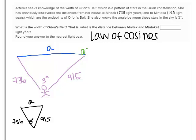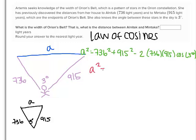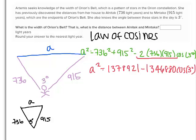We get A squared equals 736 squared plus 915 squared minus 2 times 736 times 915 times cosine of 3 degrees. You know that 736 squared and 915 squared are like terms. Adding those together gives 1,378,921. I'm going to simplify 2 times 736 times 915. In your calculator, figure out the cosine of 3 degrees first to get a decimal.